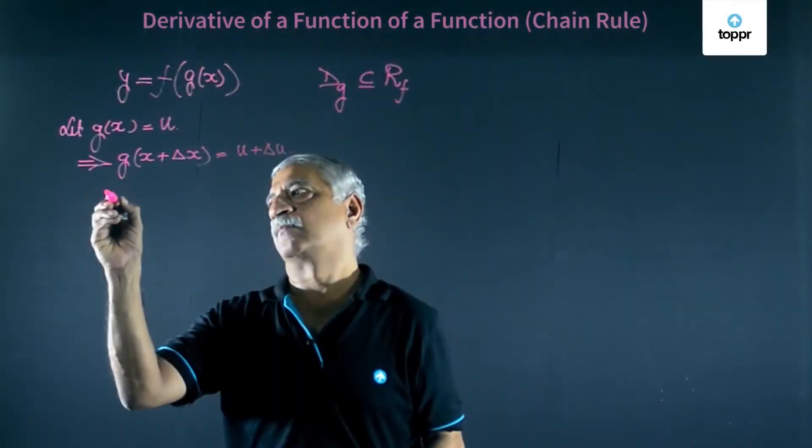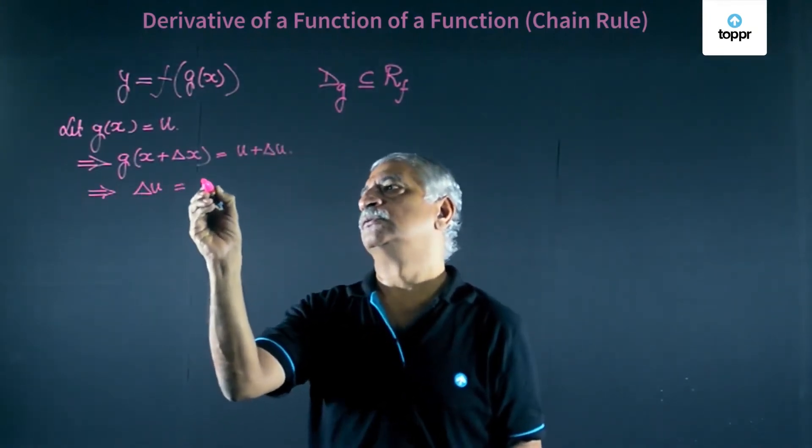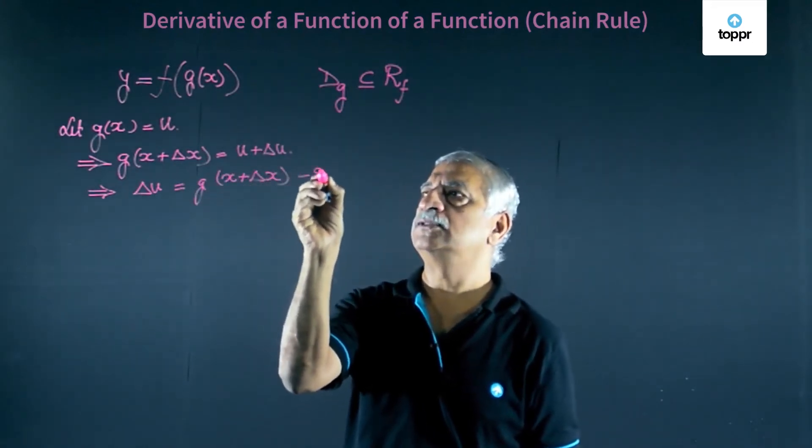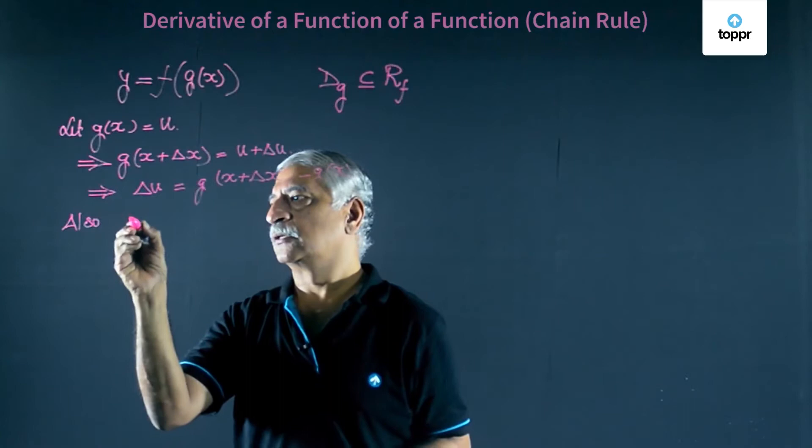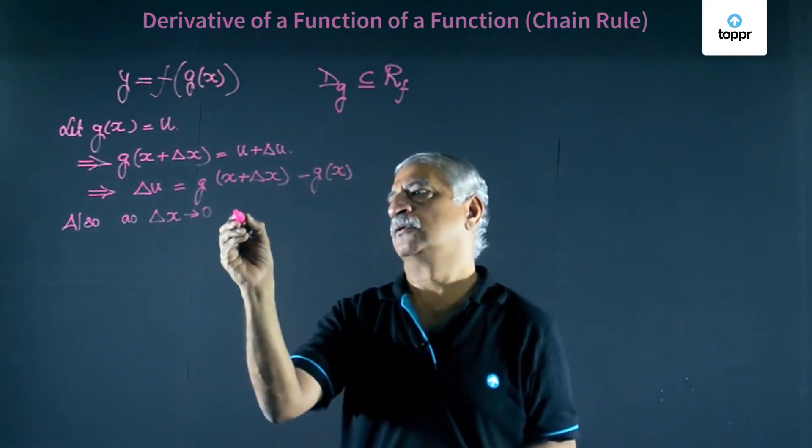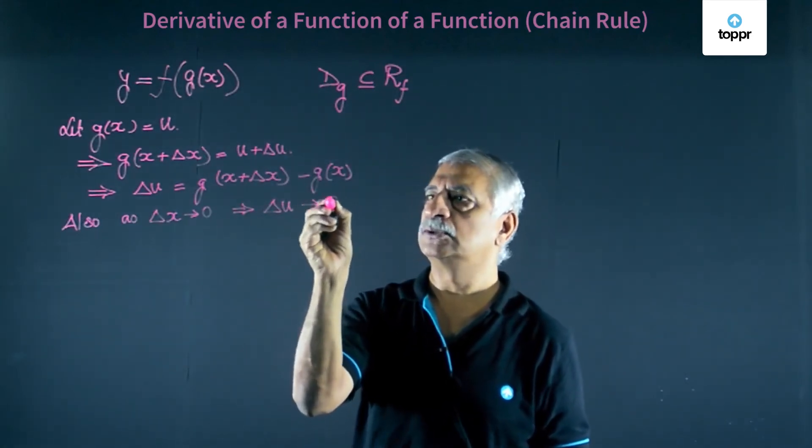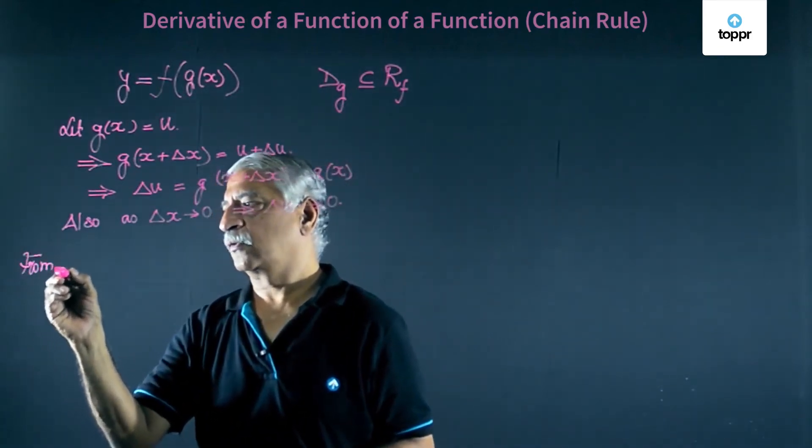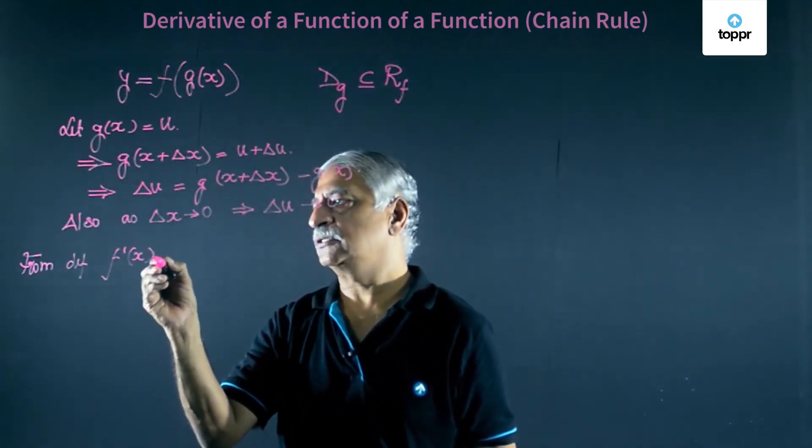We also have delta u is equal to g of x plus delta x minus g of x. Also, as delta x tends to 0, this implies delta u also tends to 0. Now from definition we have f dash x is equal to